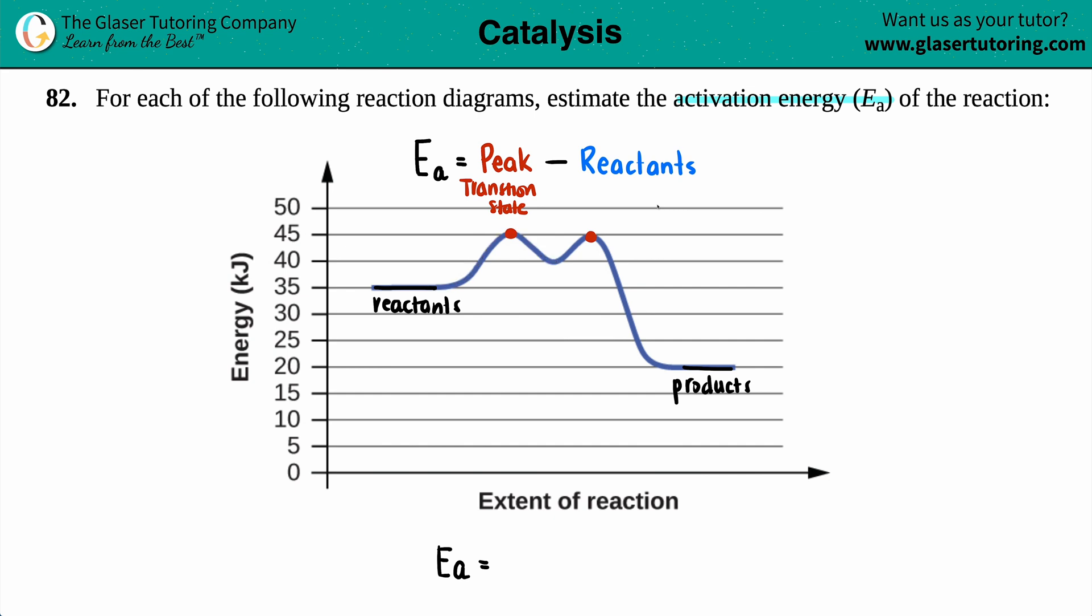Now in general, when they ask for activation energy, it's usually always for the first step. So that's what we're going to be doing. So the first peak would be with the first step. So I see that the peak is here. How many kilojoules does that have? Well, I go back to the y-axis. That is 45. So we have 45 kilojoules.